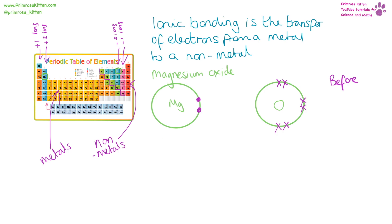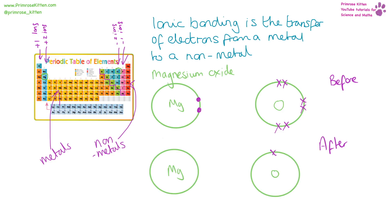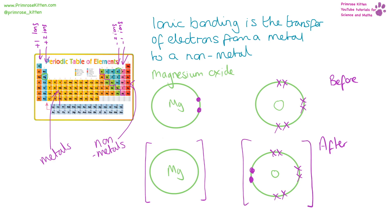Here we are going to make magnesium oxide. Magnesium is in group two, so it has two electrons in its outer shell. Oxygen is in group six, so it has six electrons in its outer shell. In ionic bonding, the electrons from magnesium are transferred to oxygen. We call these dot and cross diagrams — one element has dots for electrons and the other has crosses. We draw square brackets around these and indicate the charge: magnesium has lost two electrons so it has a +2 charge, and oxygen has gained two electrons so it has a −2 charge.